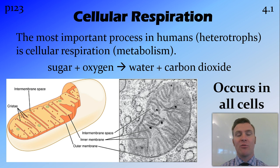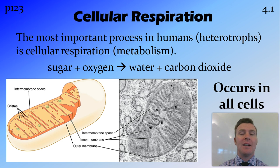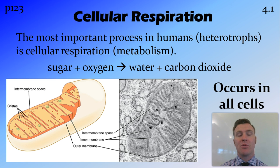But first, cellular respiration. This is the most important process that occurs in humans. As humans, we are heterotrophs, meaning that we have to get our energy from eating things. We don't magic energy from the sun, so we've got to eat things and convert this into energy.